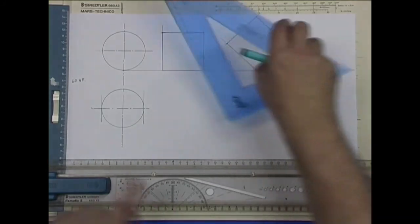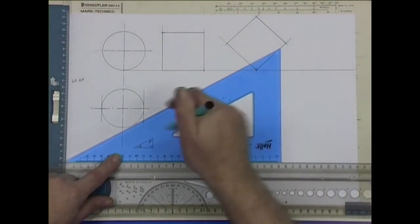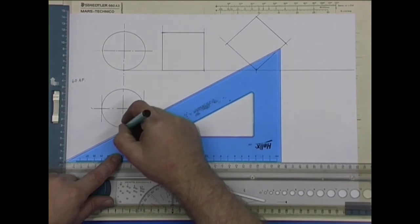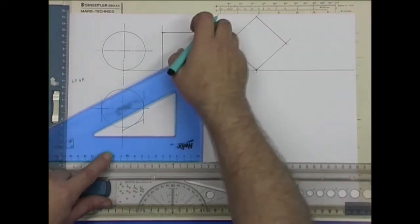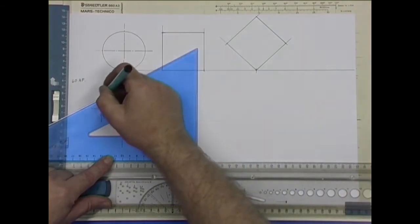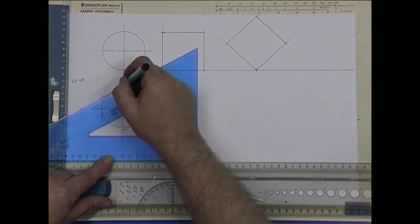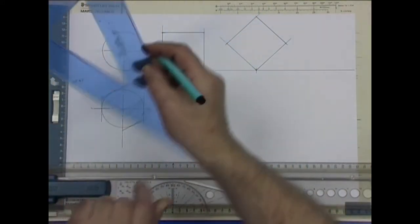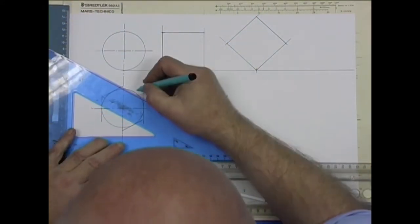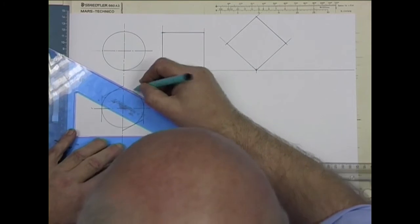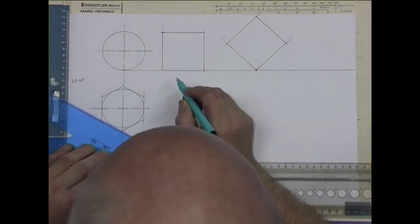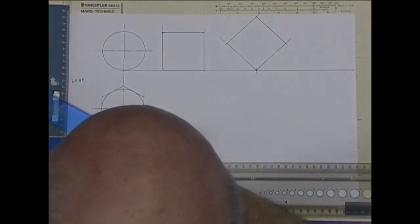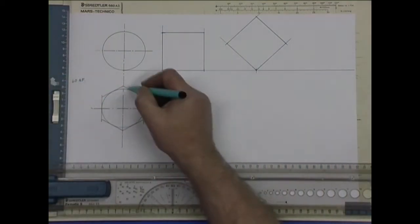Because it's a hexagon, you can use your 30 degree set square. Draw a tangent touching that one. Likewise the top, tangent touching that one. Now flip your set square over. And we've completed the hexagon.